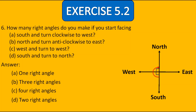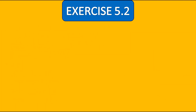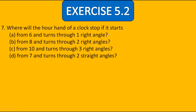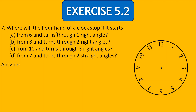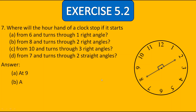Now the seventh question: Where will the hour hand of a clock stop? For A, it starts from 6 and turns through one right angle — it will reach at 9. The answer for A is at 9. For B, it starts from 8 and turns through two right angles — it will reach at 2. The answer for B is at 2. For C, it starts from 10 and turns through three right angles — it will reach at 7. The answer for C is at 7.